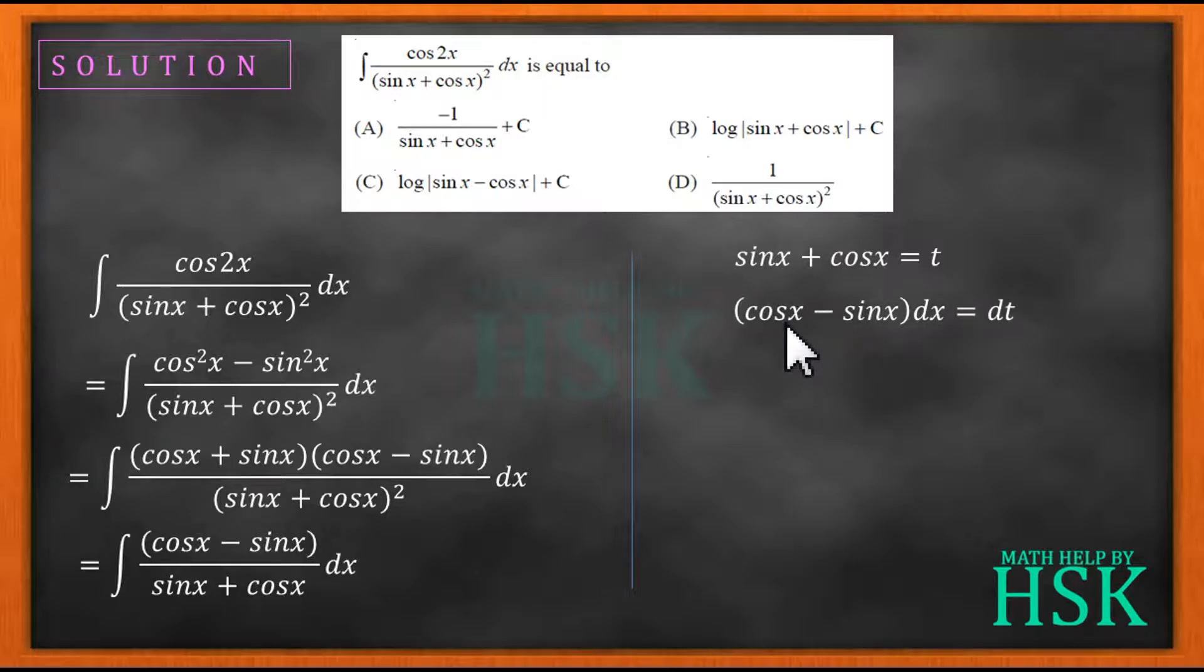So cos x minus sine x dx would be replaced by dt. I'm going to get this as equal to integration of 1 upon t dt and this can be written as equal to log t plus c.